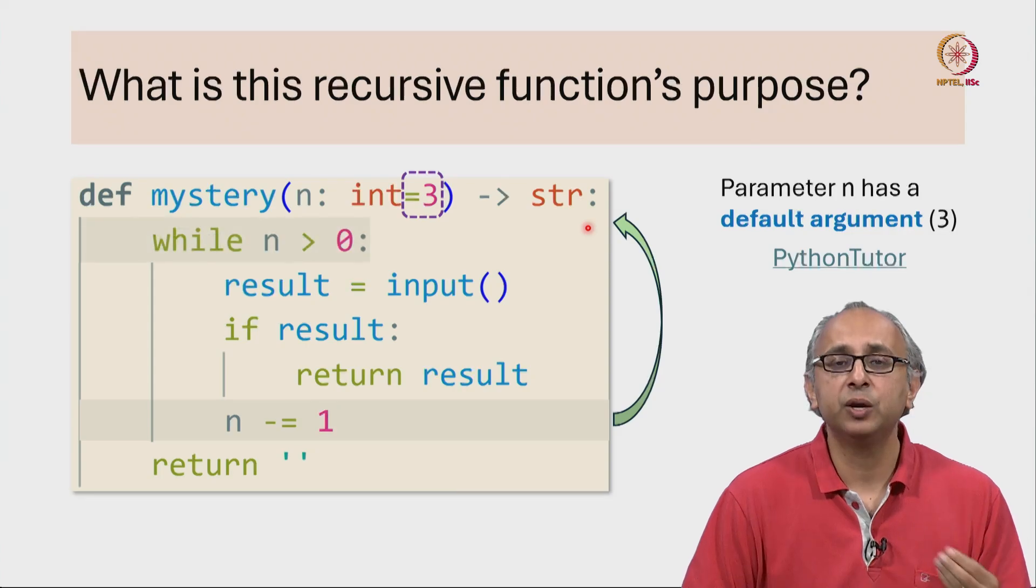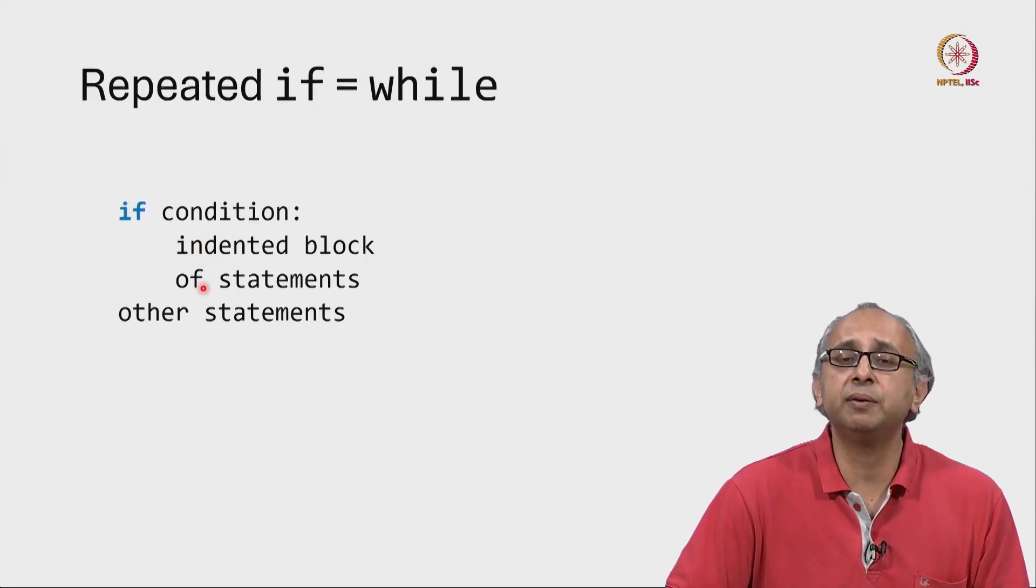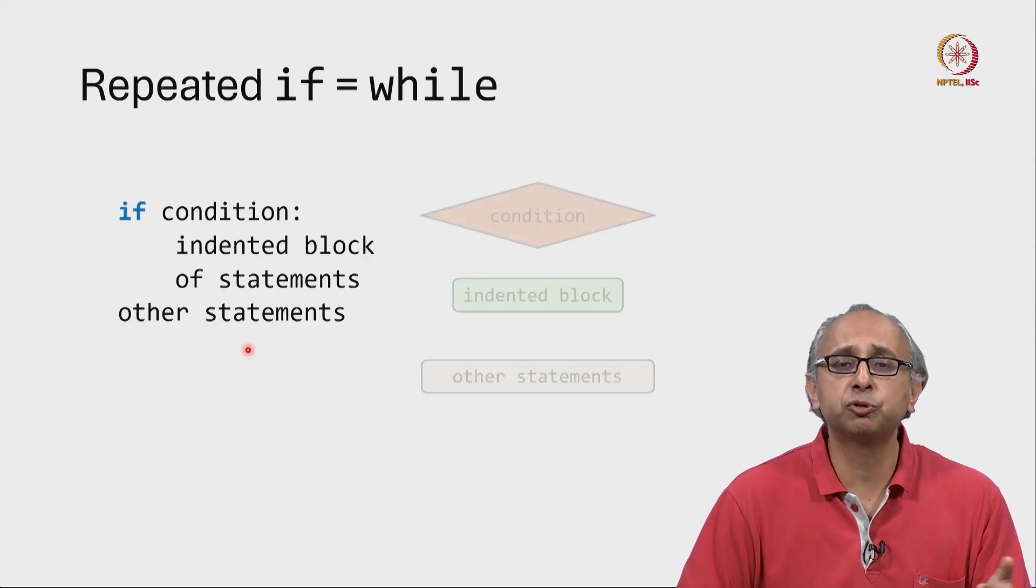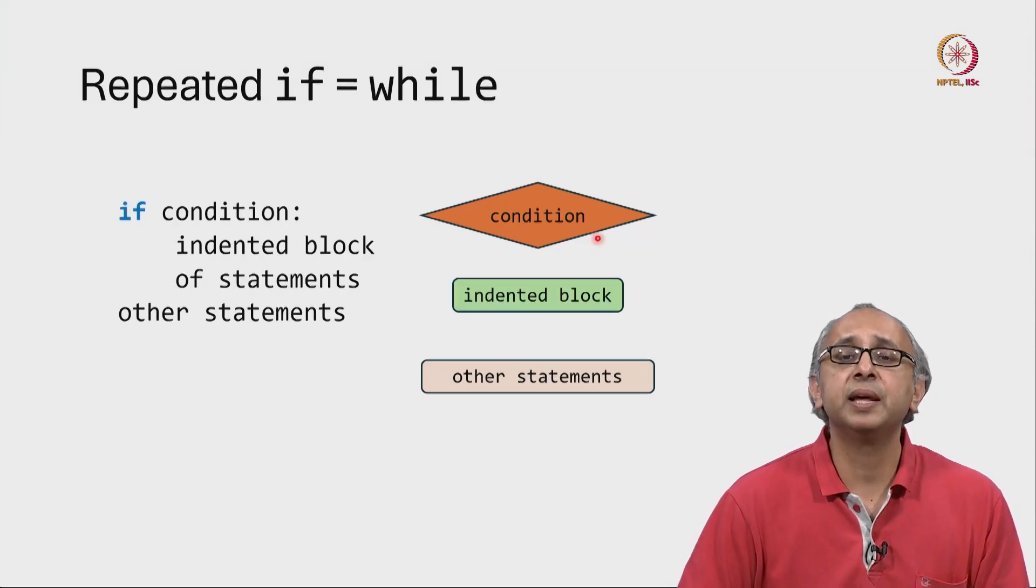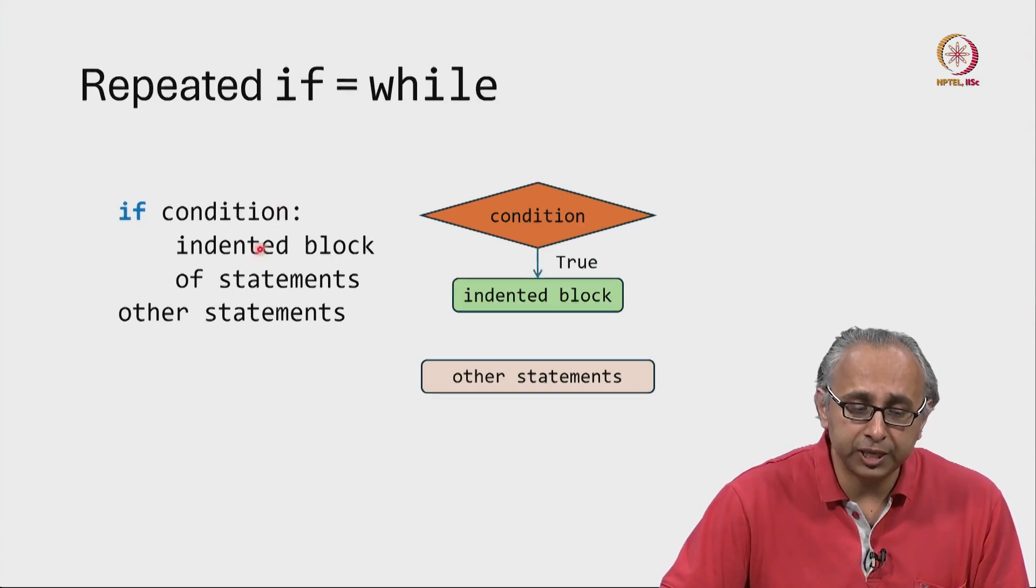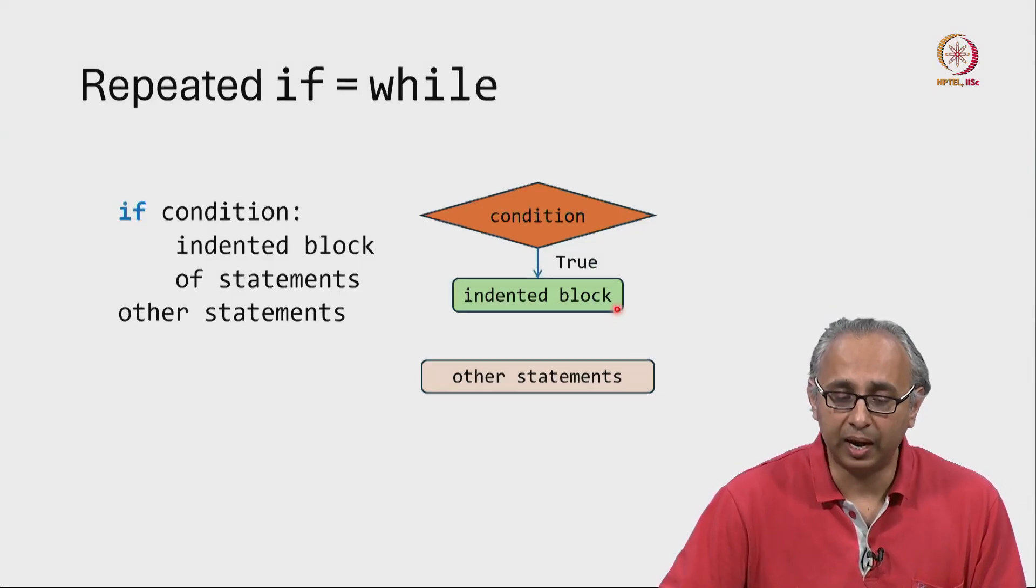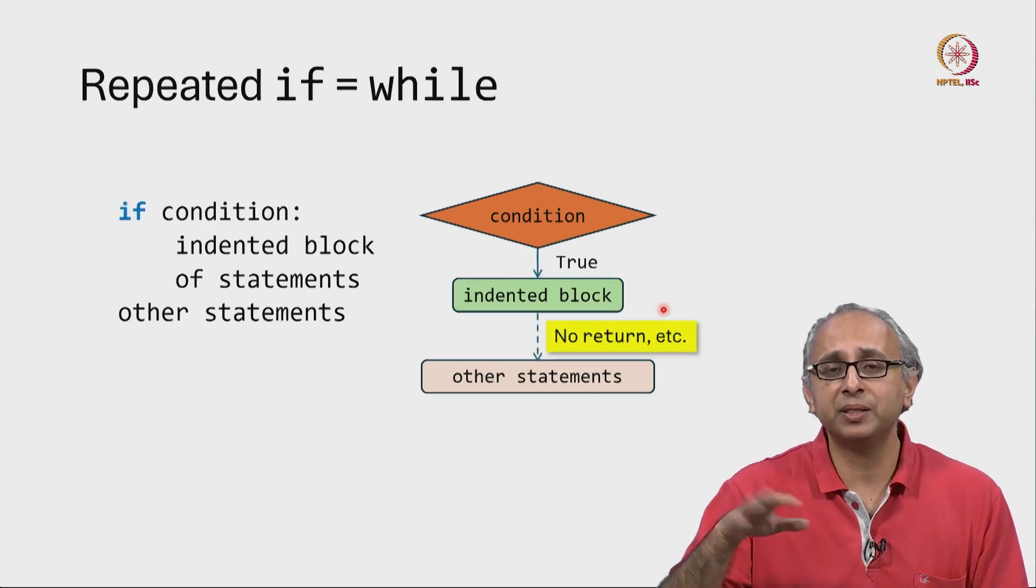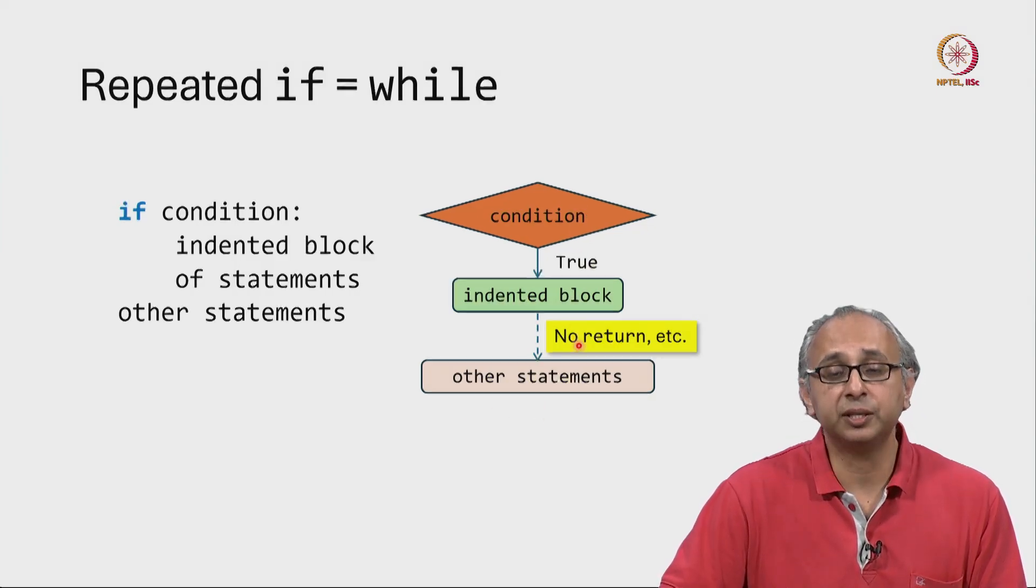Let me show this to you once again with a flow chart. So here is how we would normally write an if condition. We write if some condition and then a series of statements that are indented and then let us say there are some other statements. And we already know how control flows in this structure. We first check if this condition is true or false. Let us suppose it is true. Then control flows into the if condition and we do all the statements in the indented block. Now once we are done with these statements, assuming there aren't any return like statements, control will continue to flow and then we will do the other statements.